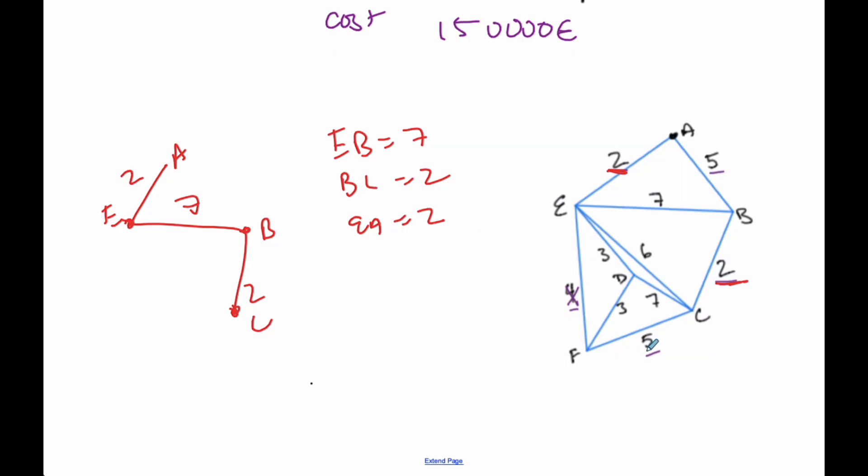And now I'm going to go to the 3's. I'm going to go E to D is 3. E to D is 3. And then I can go D to F is also 3. D to F is also 3.